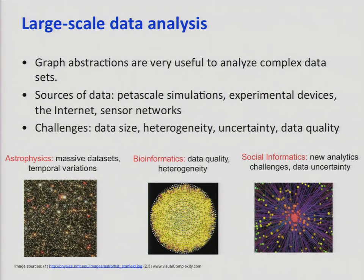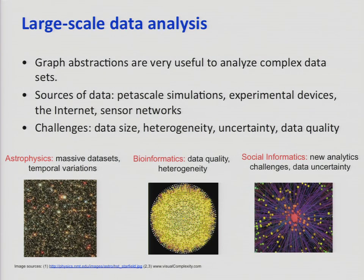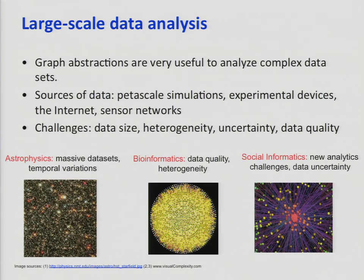In data analysis, graph abstraction is really useful to analyze complex data. Three examples are astrophysics, bioinformatics, and social informatics. Astrophysics has challenges about scale and temporal aspects. Bioinformatics has issues with heterogeneity of data — different kinds of relationships are encoded. Social informatics has issues with uncertainty. And you can argue all of them have all these challenges.